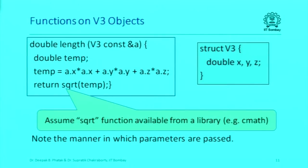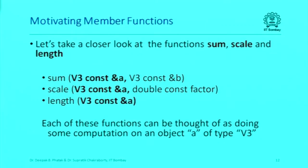Similarly, we can do scaling: just take each of the coordinates and multiply them by a factor. The length is also straightforward: take the coordinates, square them, add them up and take the square root. The square root — if you recall, towards the beginning of the course we wrote our own function using loops to compute integer square roots. But you can also use the cmath library which gives you the square root function. One thing to note in these three functions is that in each of them there is an object A of type v3, and I'm doing some operation on it.